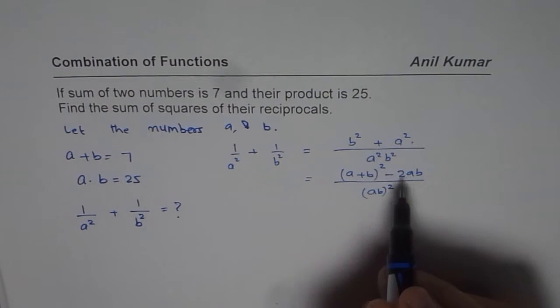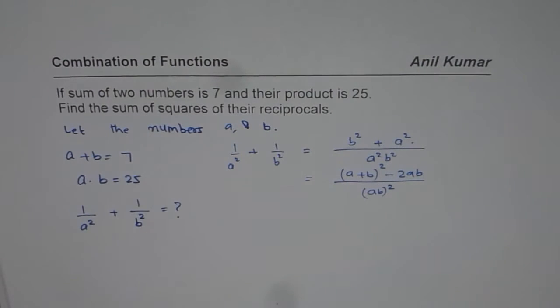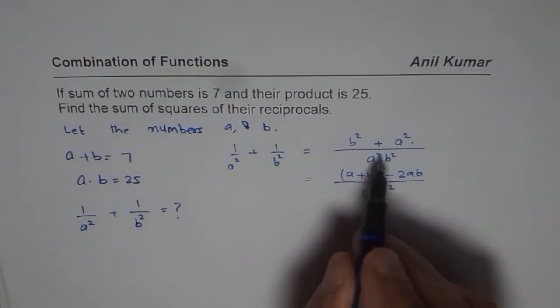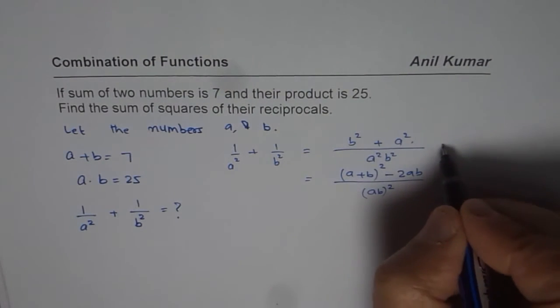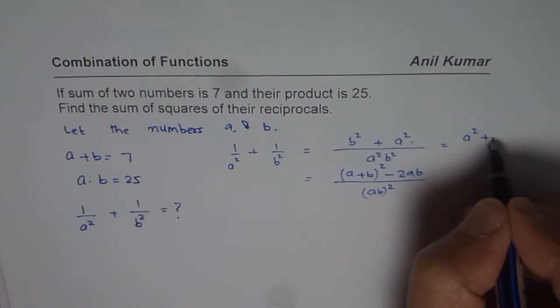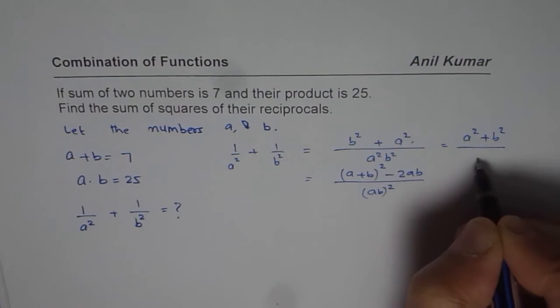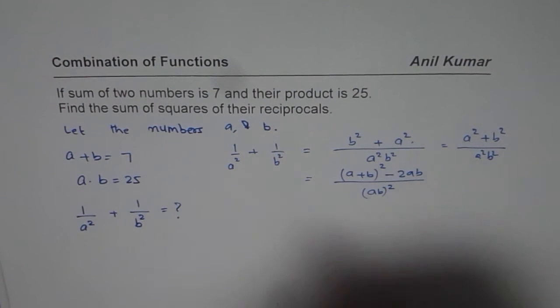Once you understand it, it's going to help you in this chapter of combination of functions. So we could write B squared plus A squared as this. First let me write this as A squared plus B squared, rearranged.